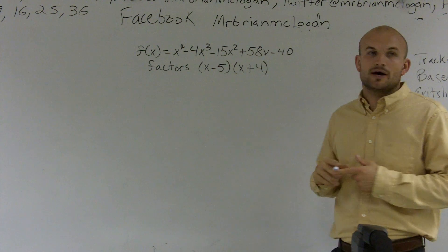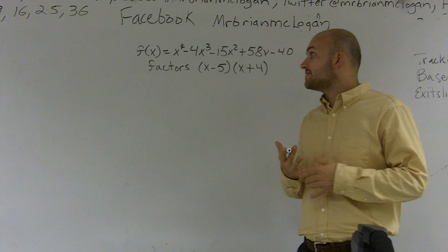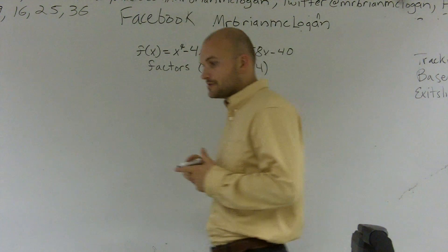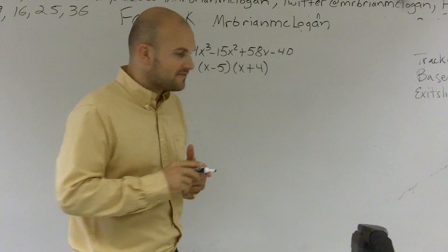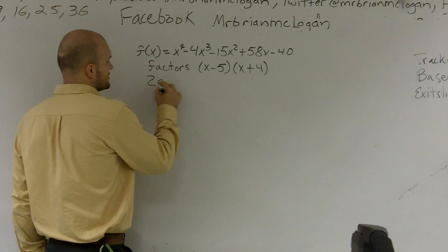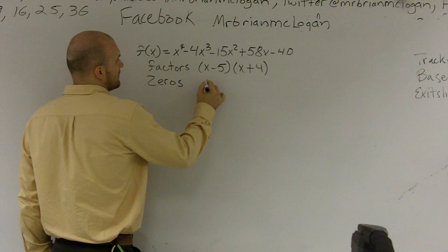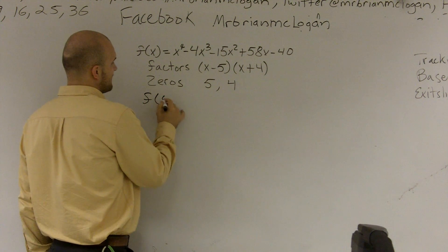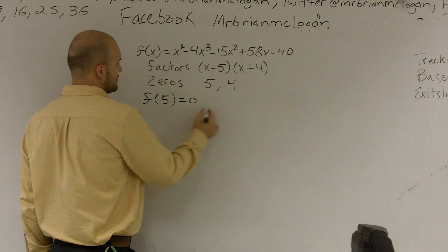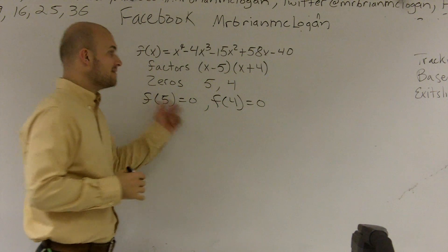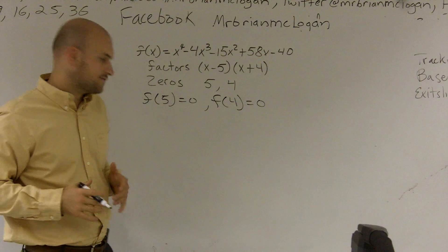I can verify these are two factors of my polynomial if they divide evenly into my function. I can also determine if they are factors if I determine what the zeros are, so the zeros of these would be 5 and 4. And if I get f of 5 equals 0 and f of 4 equals 0, then I also can verify these are both factors.